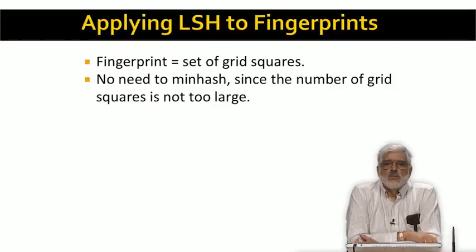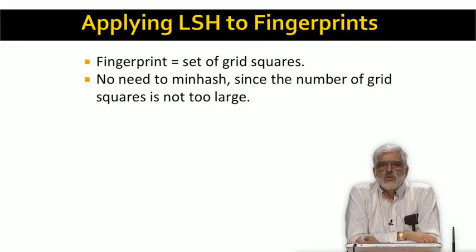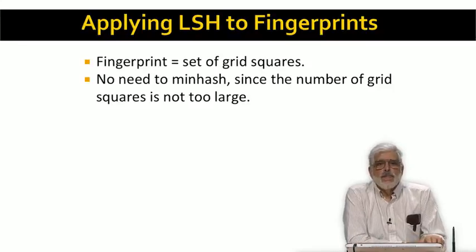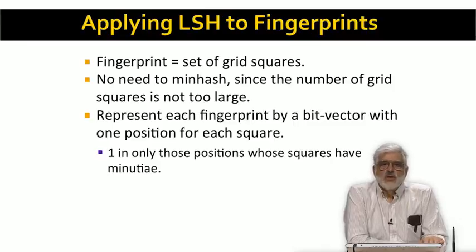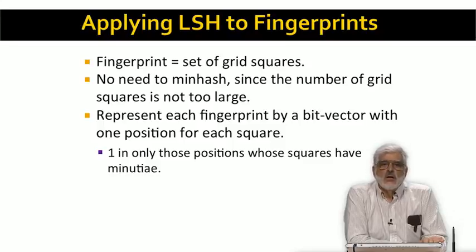We could minhash these sets, but there is no need to. The universal set is the set of grid squares, and the grid is not too fine, so there might be hundreds or at most thousands of squares in the grid. We can thus represent each set by a bit vector with one position for each square. The ones represent squares with minutiae. If there are, say, 1,000 grid squares, each bit vector takes 125 bytes. That's much less space than, say, a vector of 100 integer minhash values.